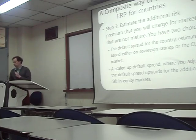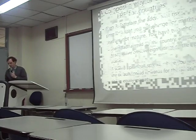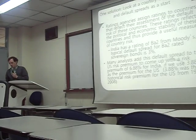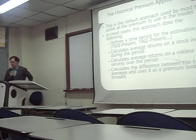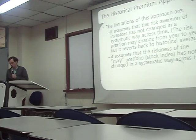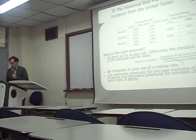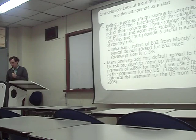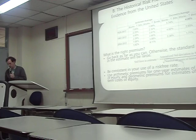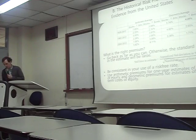Last class we were talking about the risk premium. There are two main approaches: the historical approach and the future approach. We looked at the historical approach, which is finding the average return in the past. For the US, from 1962, that average return is about 3.9 percent.